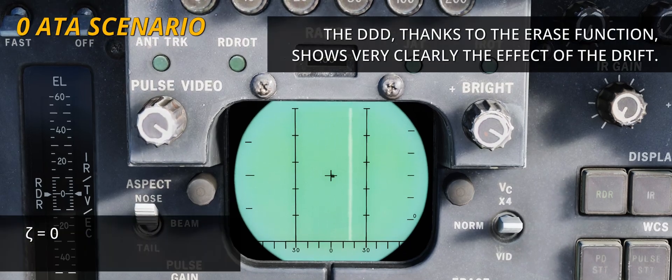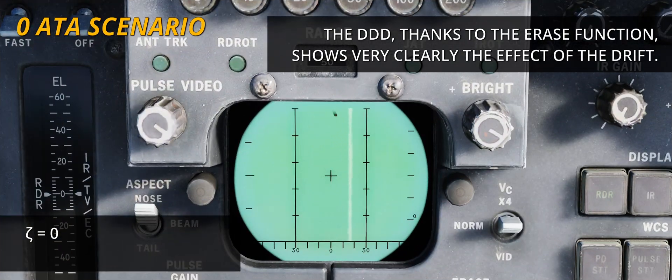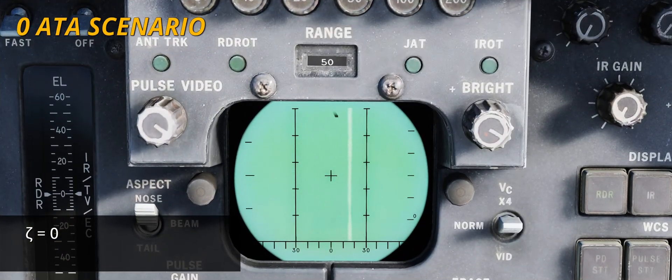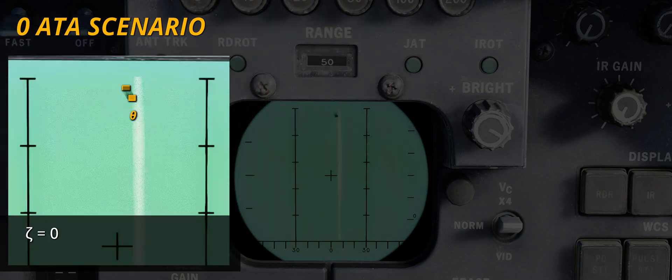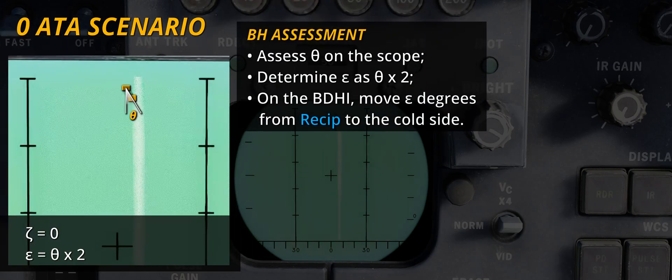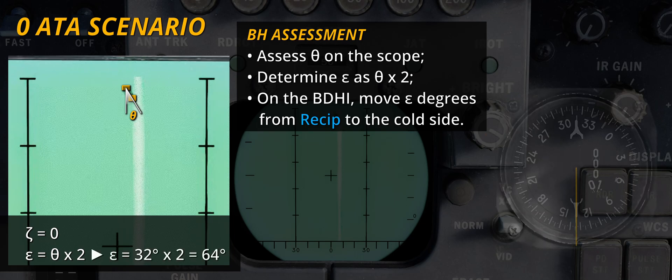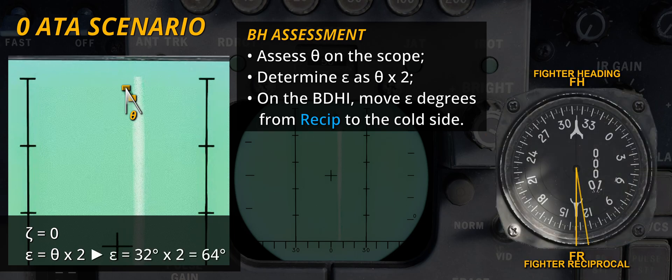A peculiar scenario is the bandit on the nose. In this scenario, the reference for the angle determination is not CATA but 0ATA. Starting with the bandit's heading, the drift angle is again assessed and doubled. Then, starting from the reciprocal on the B-DHI, it is subtracted towards the cold side of the scope and the bandit's heading is obtained.